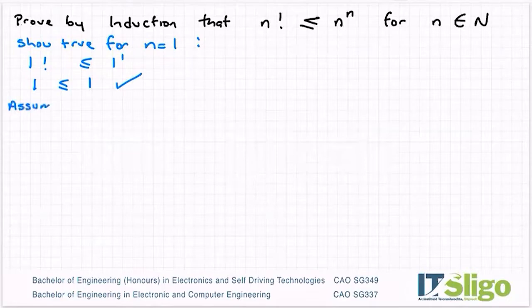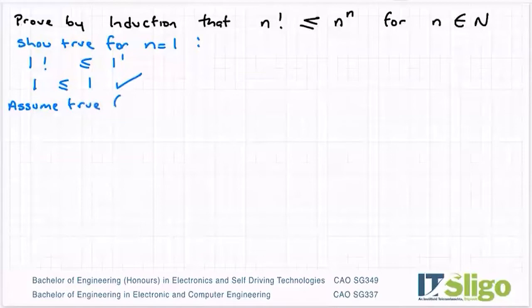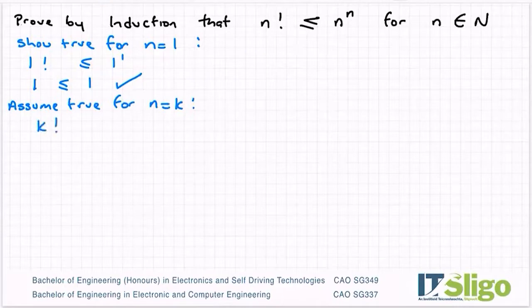We're going to assume true for n is equal to k. So therefore I get k factorial is less than or equal to k to the power of k. Not too much I can do with that to simplify it.